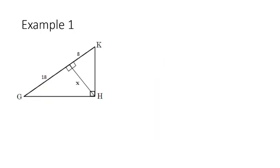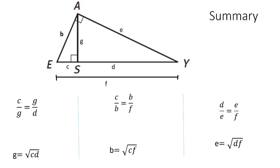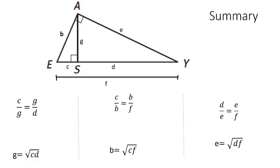To summarize, here are the three relationships you need to know, represented as proportions and as geometric mean. If you can execute those three types of problems, you're good to go for this lesson.